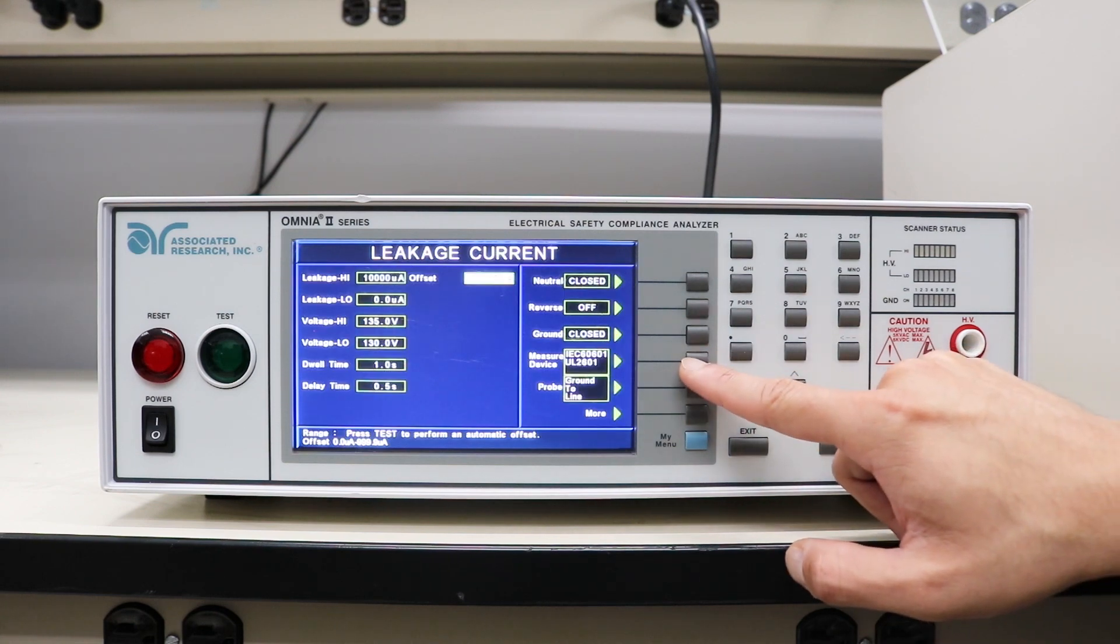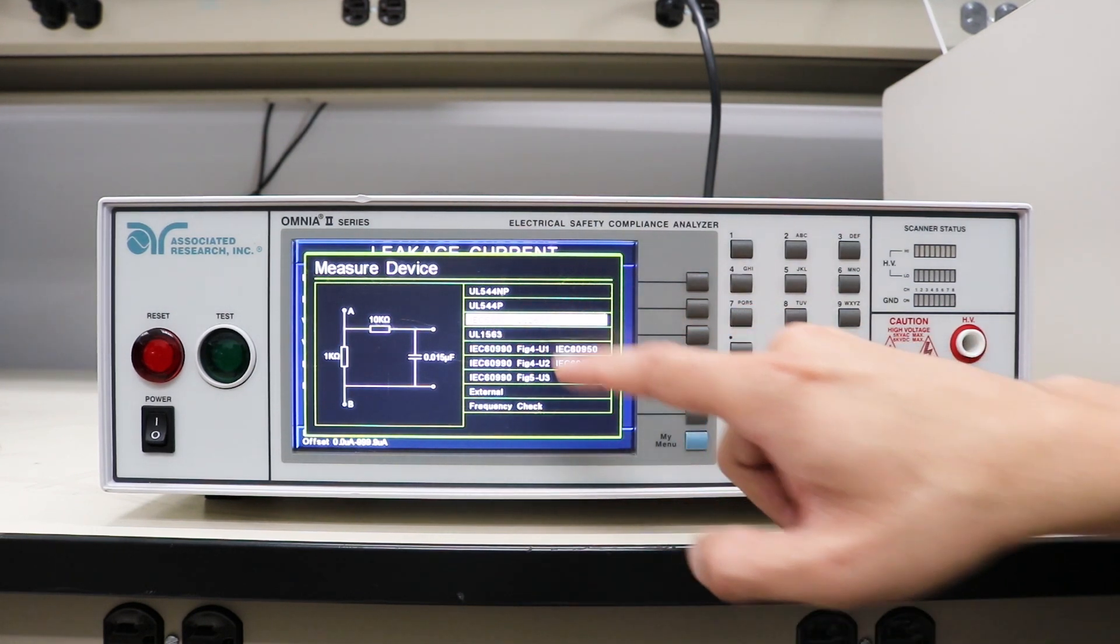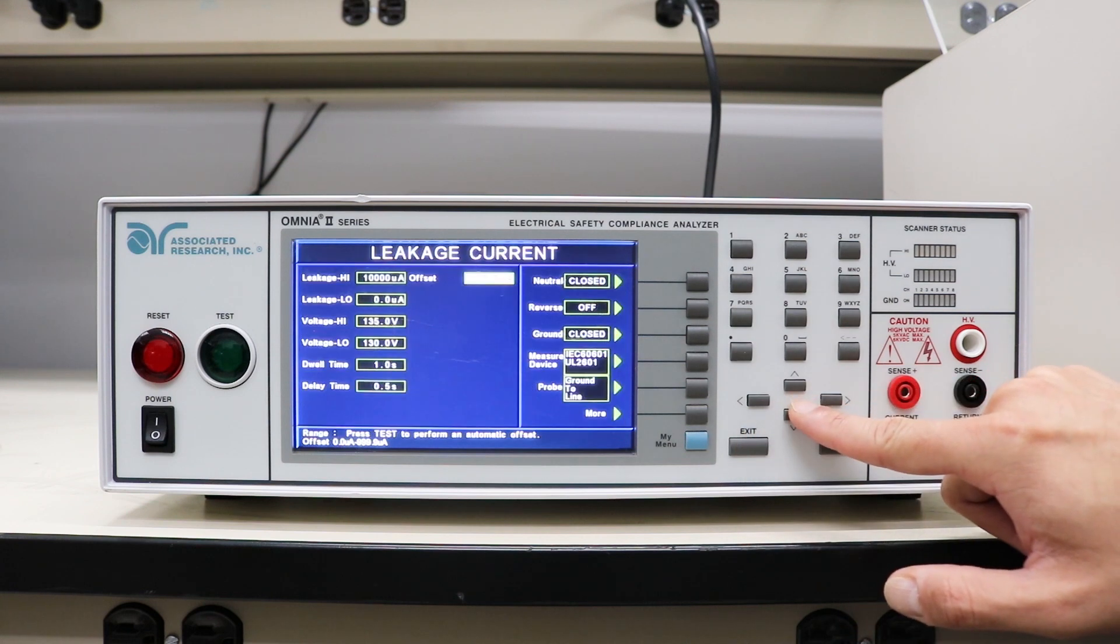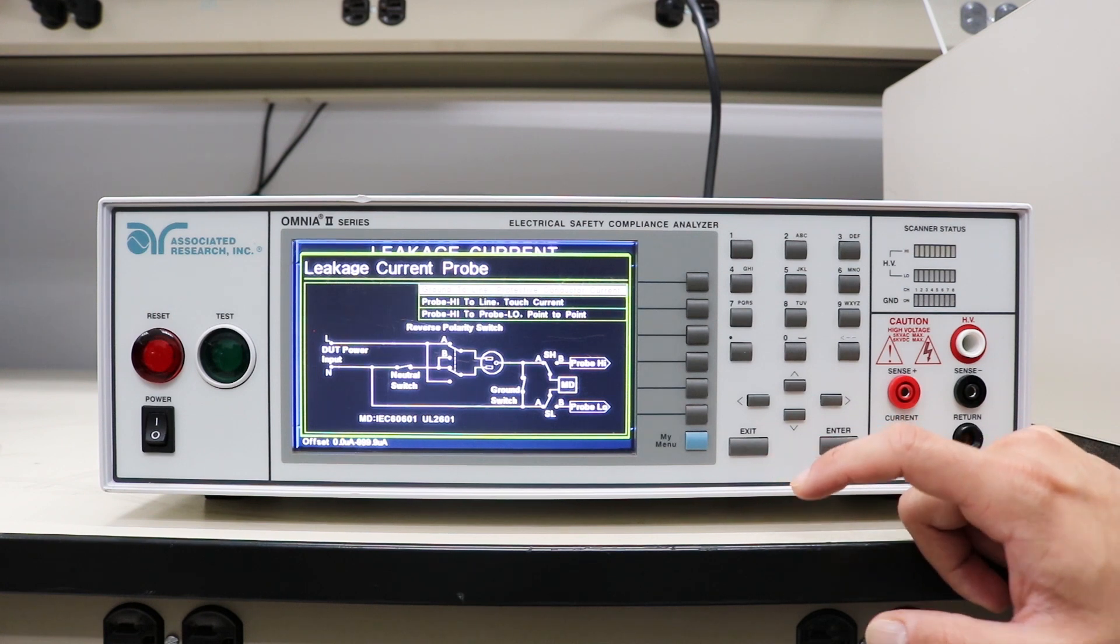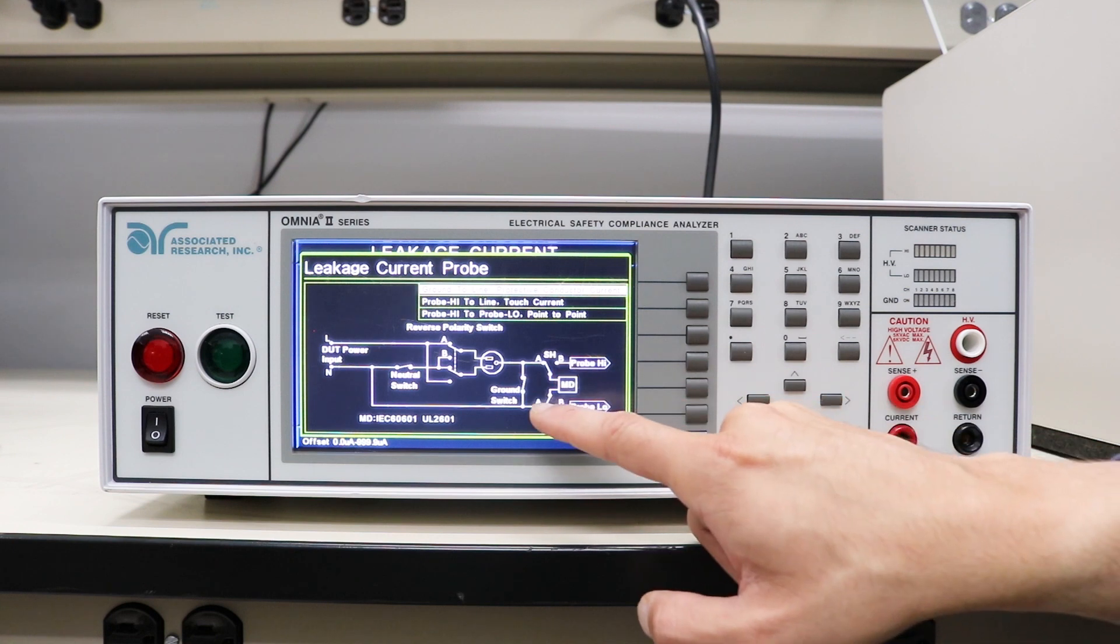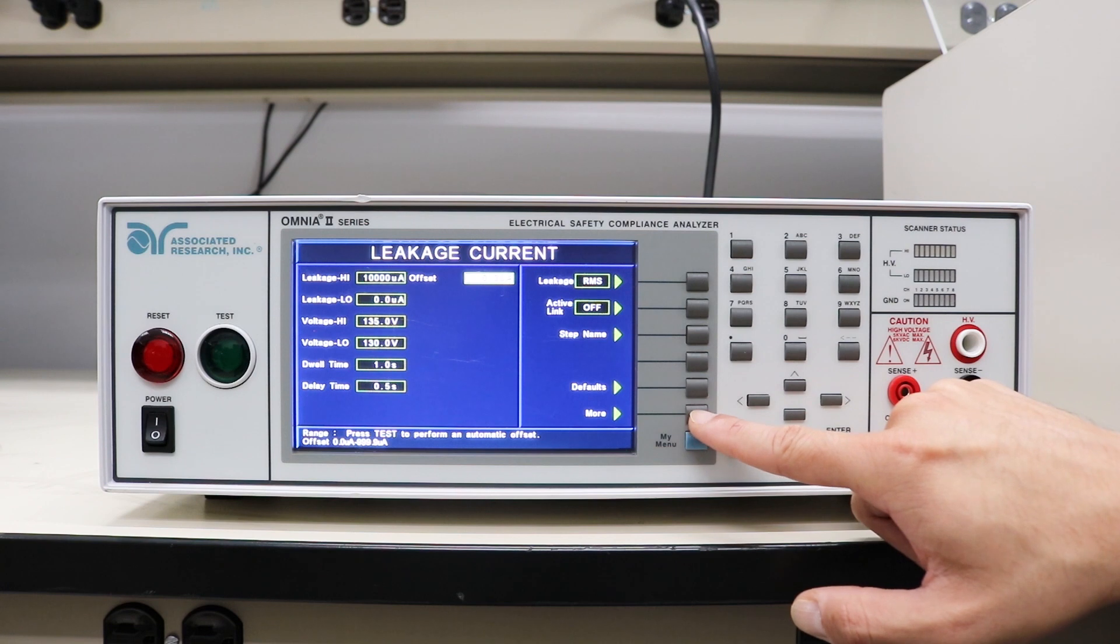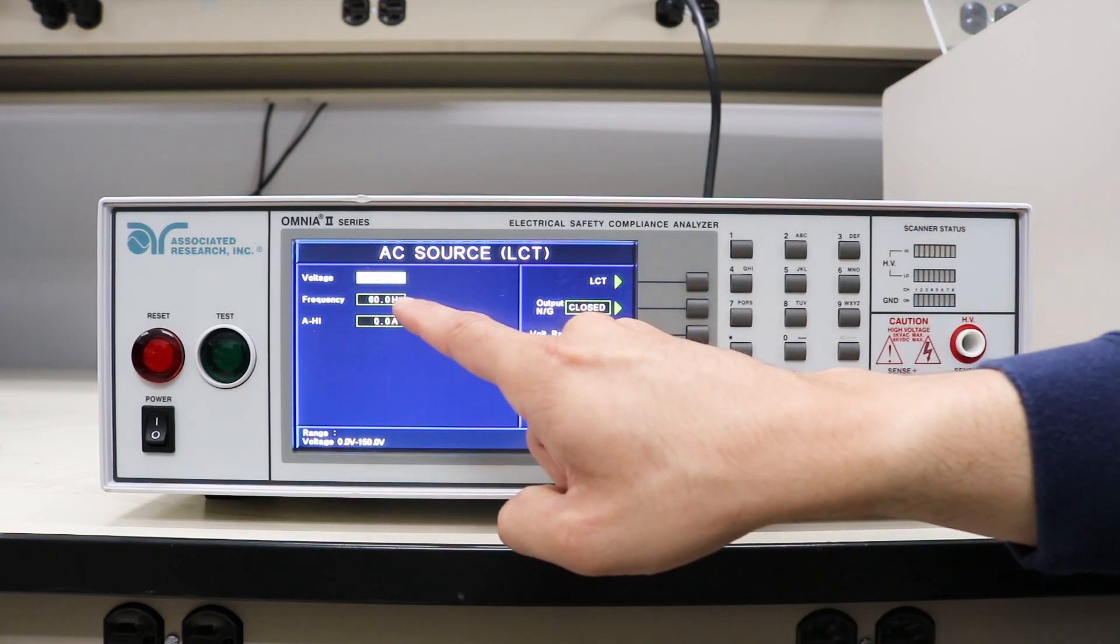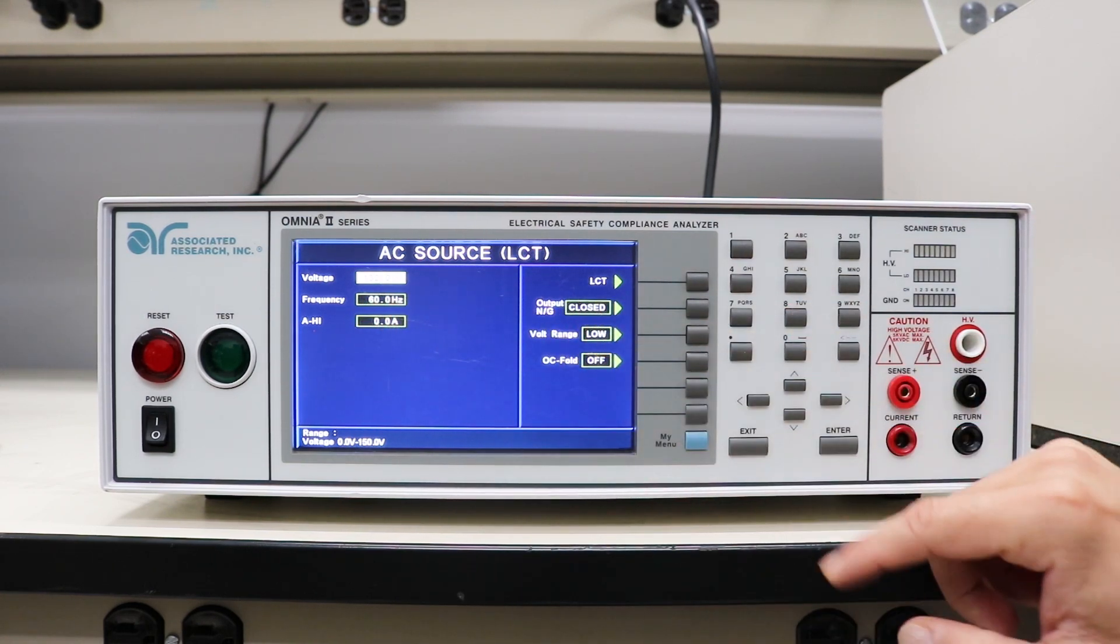We have our measuring device circuit which is the IEC 601 per the test standard that we're testing, the medical device standard. That's followed by the probe configuration. We want to make sure that our MD is placed in the right position between the ground and the low side of the power supply. Lastly, the AC source setup is set to output 132 volts at 60 hertz in a grounded neutral configuration.